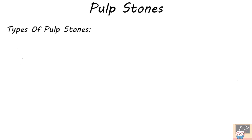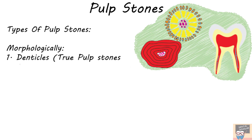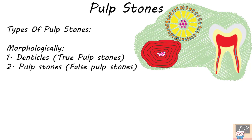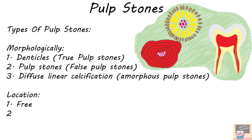Pulp stones can be classified based on morphology and location. Based on morphology, pulp stones can be classified as denticles (true pulp stones), false pulp stones, and diffuse linear calcifications, also known as amorphous pulp stones. Based on location, pulp stones can be classified as free, attached, and embedded.